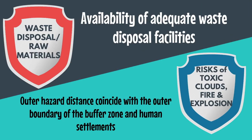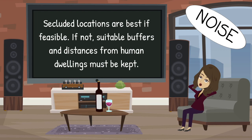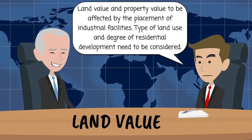Waste disposal or raw materials: sites should be near to sources of principal raw materials and ensure availability of adequate waste disposal facilities. Risks of toxic clouds, fire, and explosion: locate facilities so that the outer hazard distances coincide with the outer boundary of the buffer zone and human settlements. Noise: secluded locations are best if feasible; if not, suitable buffers and distances from human dwellings must be kept. Land value: land and property values are likely to be affected by the placement of industrial facilities in a given area. The type of land use along roadways leading to the site entrance and the degree of residential development in the vicinity need to be considered.